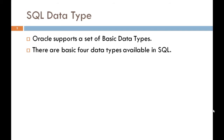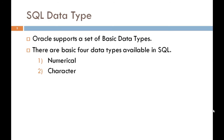There are basically four types of data types available in SQL. The first one is numerical. The second one is character. The third one is date. And the fourth one is binary.